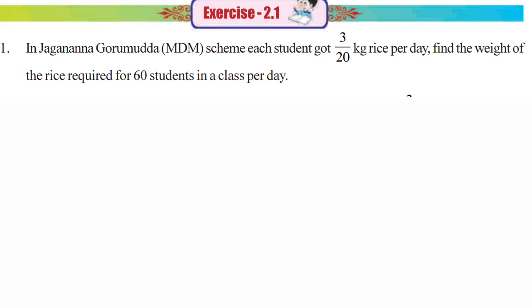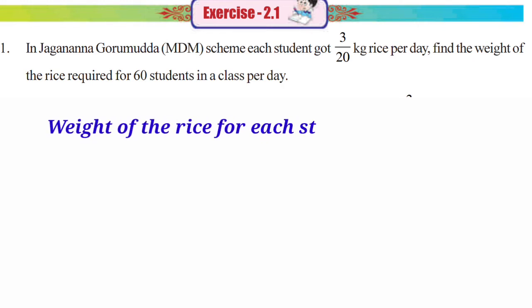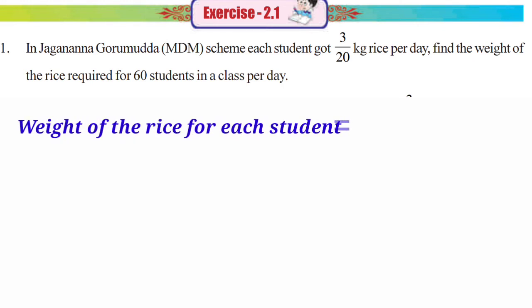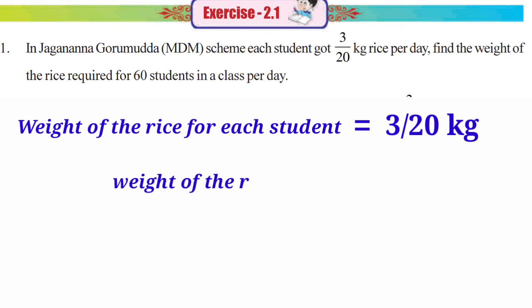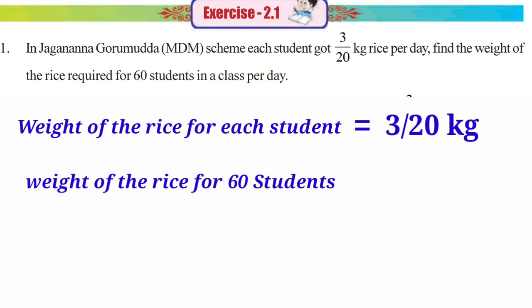In the problem, the given information: the weight of rice for each student is equal to 3/20 kg. They are asking: the weight of rice for 60 students is equal to 60 multiplied by 3/20.